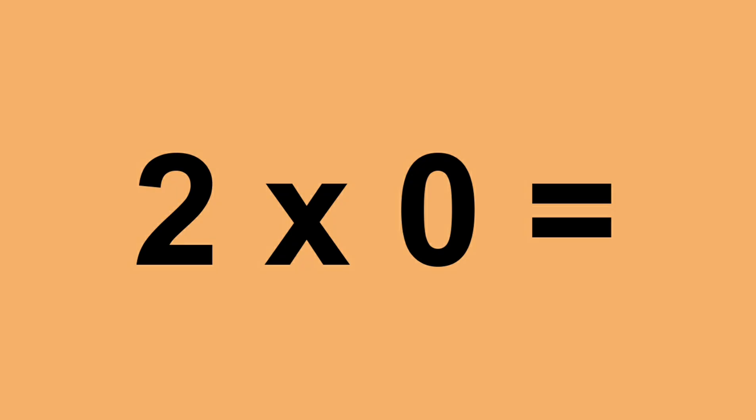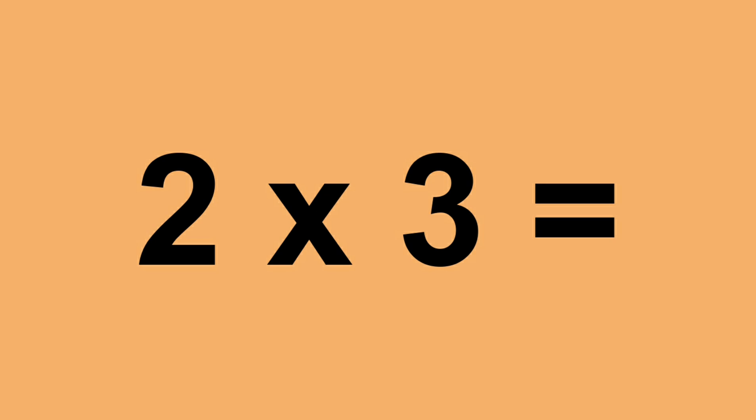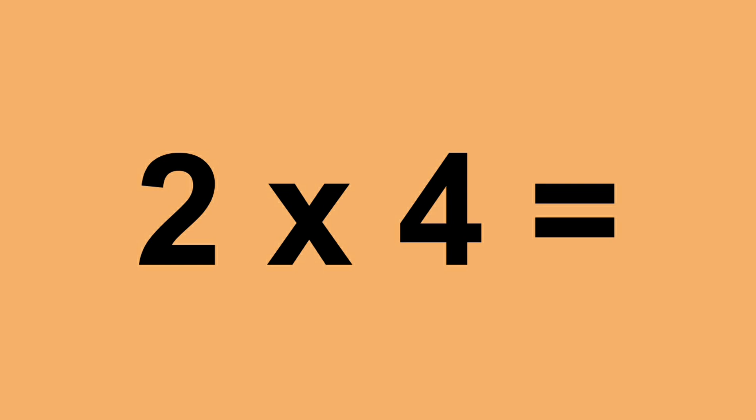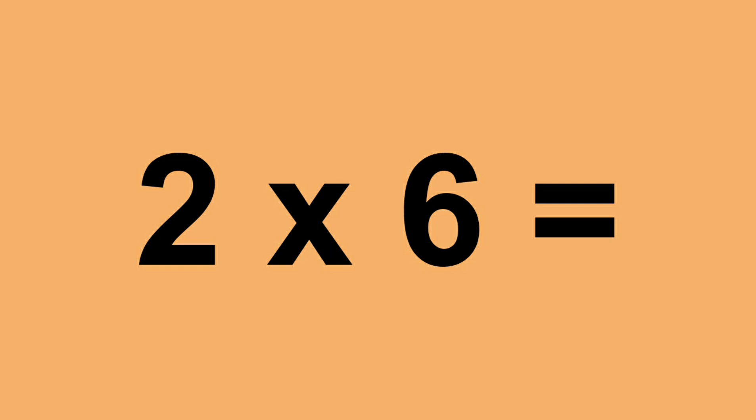Two times zero equals zero. Two times one equals two. Two times two equals four. Two times three equals six. Two times four equals eight. Two times five equals ten. Two times six equals twelve.